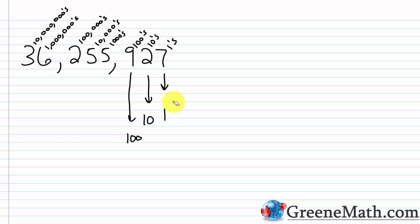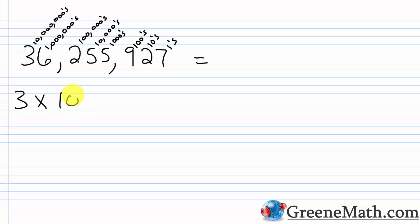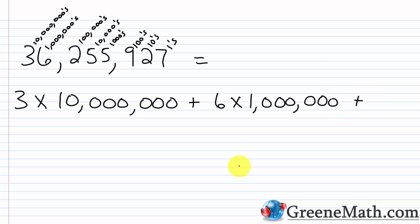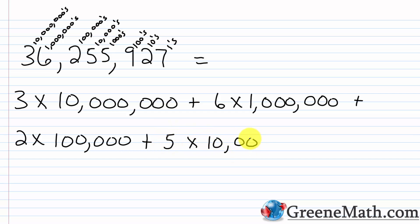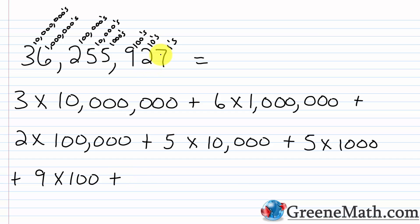Now let's take this number and write it in expanded notation. It's a big number so it'll take a little time. We have a 3 in the 10,000,000s place, so 3 times 10,000,000. Then plus, we have a 6 in the millions place, so 6 times 1,000,000. Plus, we have a 2 in the 100,000s place, so 2 times 100,000. Plus, we have a 5 in the 10,000s place, so 5 times 10,000. Plus, we have another 5 in the 1,000s place, so 5 times 1,000. Plus, we have a 9 in the 100s place, so 9 times 100. Plus, we have a 2 in the 10s place, so 2 times 10. And lastly, plus 7 times 1 — a 7 in the 1s place.